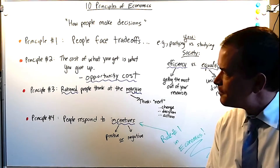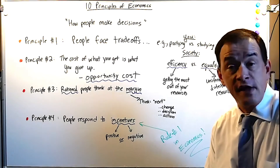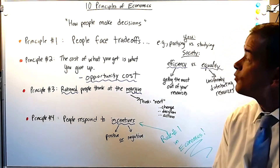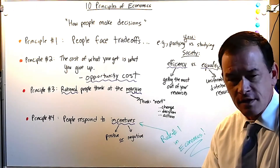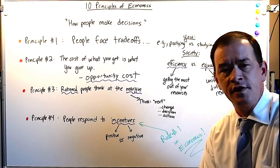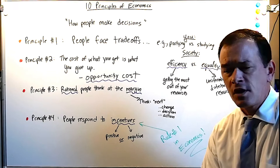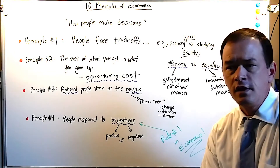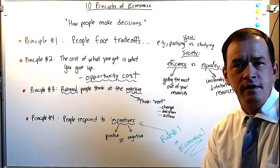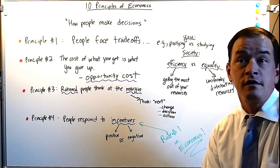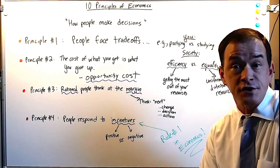The first category encompasses four of our ten principles. Principle number one: people face trade-offs. If you're watching this, you're spending time on this video and giving up something else. A classic example for a college student — you could be partying, or you could be studying. The cost of studying is more of a social life, and the cost of a social life is studying your economics, writing your English paper, or studying for chemistry.